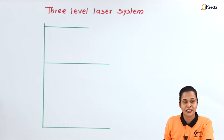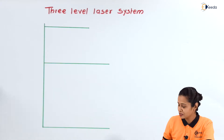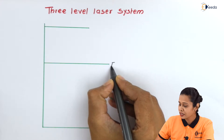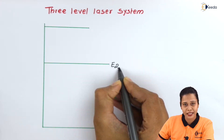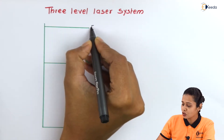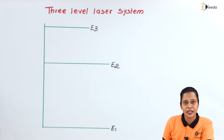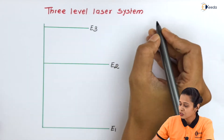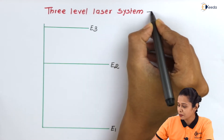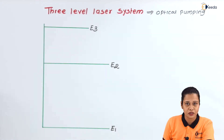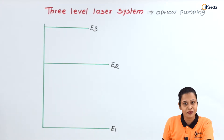In case of the 3 level laser system, we will consider here 3 different energy levels. Let us say energy level E1 is the ground state, then we have energy level E2 which is an excited state, and E3 is also an excited state. We will consider here optical pumping, where we are using a strong light source of suitable frequency and wavelength.